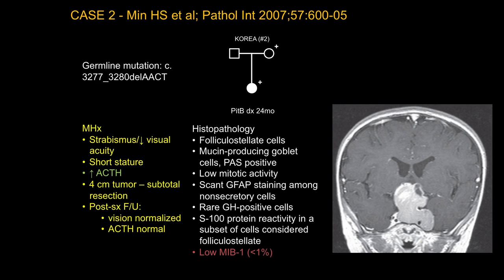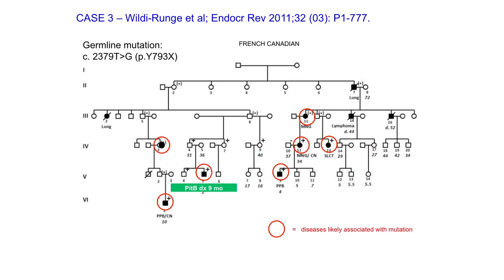This child had a germline mutation carried by the mother who appears well. When we extended the pedigree of a child with pituitary blastoma at age 9 from Montreal, we found cases of goiter, Sertoli-Leydig cell tumors, cystic nephromas, and a Wilms tumor. The penetrance appears fairly low, but why it singles out one child for pituitary blastoma, nobody knows.